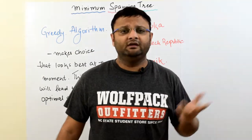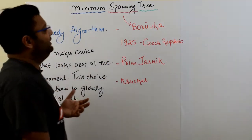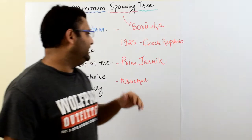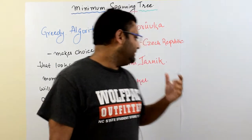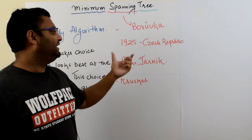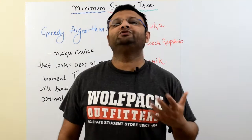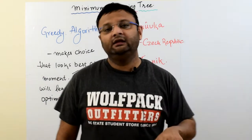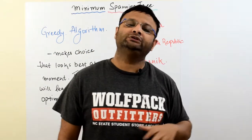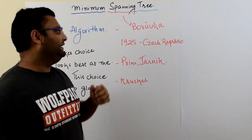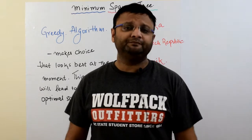Borůvka was a mathematician, not a computer scientist, so his algorithm went largely unheard of for a long time. When the computer science field took off, two people — Prim and Jarník — came up with a minimum spanning tree algorithm. Although different from Borůvka's, it was also based on the greedy approach. Later, Kruskal came up with another minimum spanning tree algorithm, also based on the greedy approach.